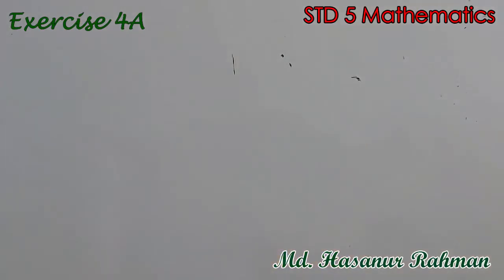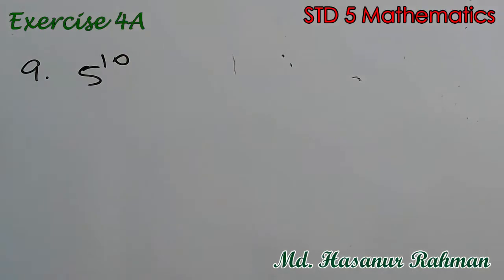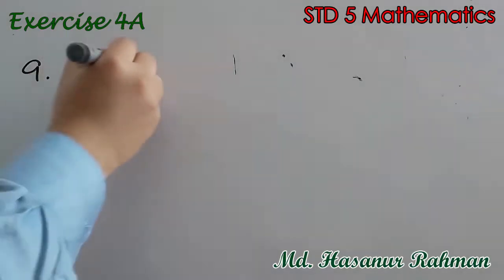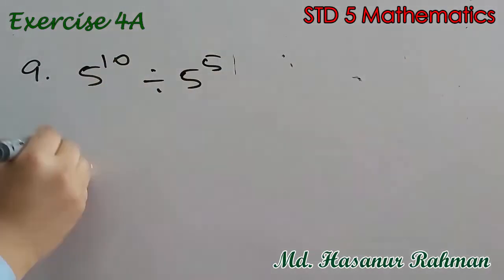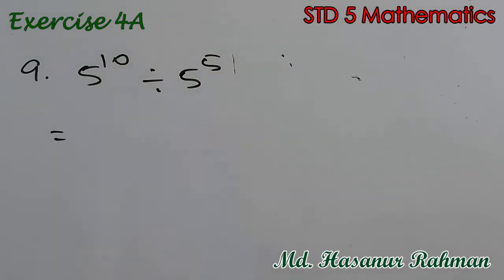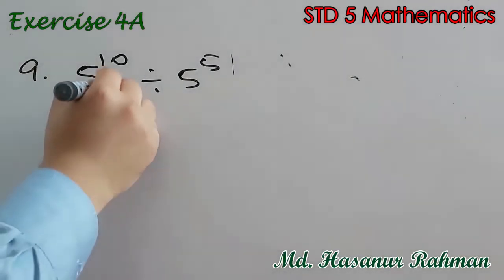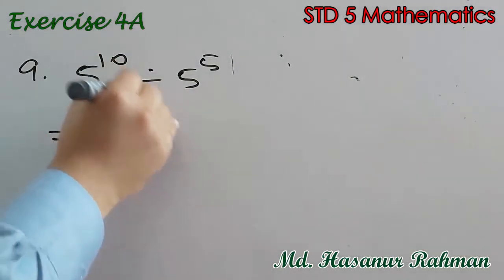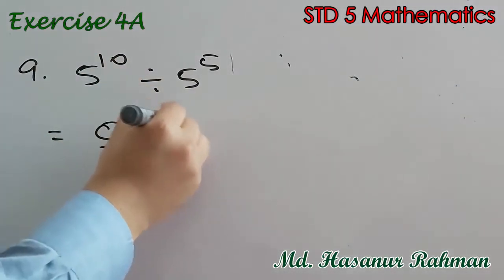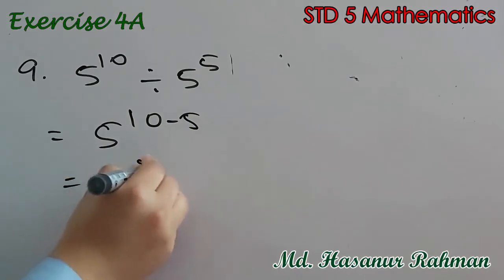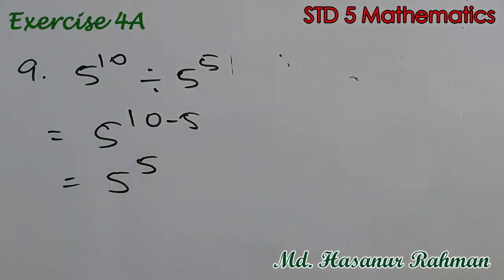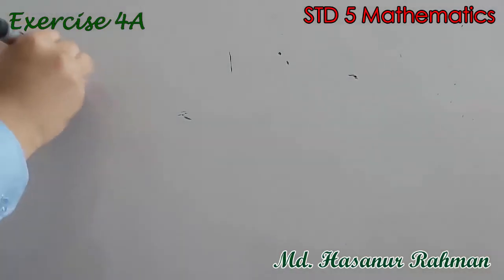Now number 9 says 5 to the power 10 divided by 5 to the power 5. When you see they have the same base, you can subtract the powers: 10 minus 5, so the answer will be 5 to the power 5.